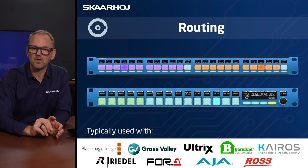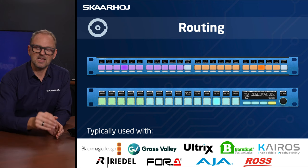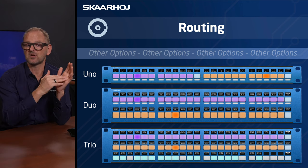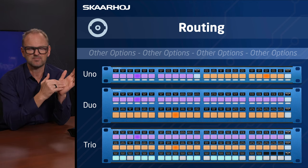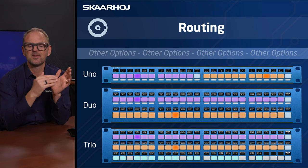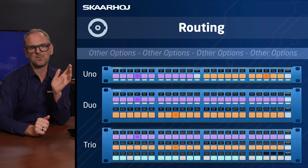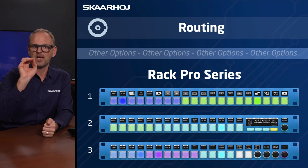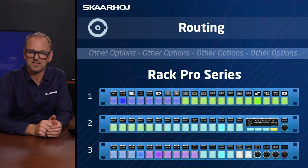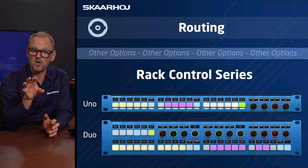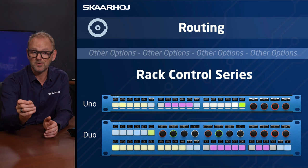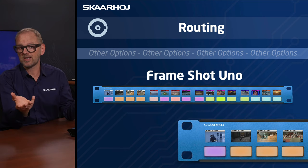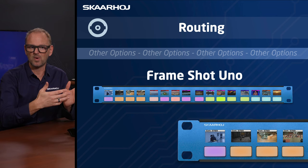You can also expand routing with RagFly Duo at 48 buttons or RagFly Trio at 72 buttons — siblings to the RecFly Uno. The RagPro series features broadcast-style NKK buttons in rack units, available as RagPro 1, 2, and 3. The RagControl series is great for rack-based camera shading and parameter adjustment with encoders. Finally, the Frameshot Uno is unique with its color displays and four-way buttons — usable for routing but also for recalling presets on cameras that support preset thumbnail communication.